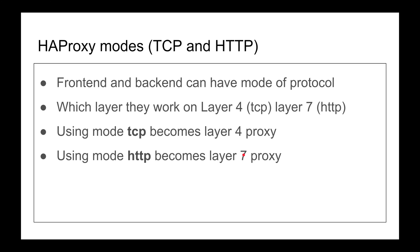Let's talk about modes — TCP and HTTP modes. HAProxy is one of those proxies that actually supports Layer 4 and Layer 7 proxying. At the TCP layer (Layer 4), you have very few things to work with: you can see the IP address and the port, that's it. You cannot see the content, you cannot do rerouting, you cannot do header rewrites — any of that stuff.